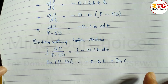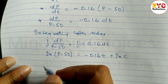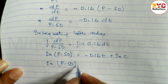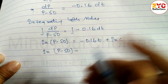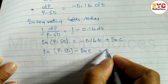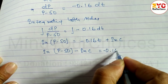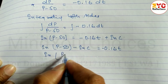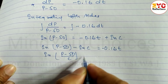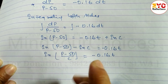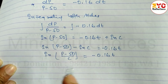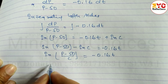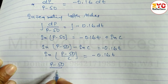Rearranging the left side: ln(p − 50) − ln c = −0.16t, which gives ln[(p − 50)/c] = −0.16t. Taking exponential on both sides, the log cancels: (p − 50)/c = e^(−0.16t).